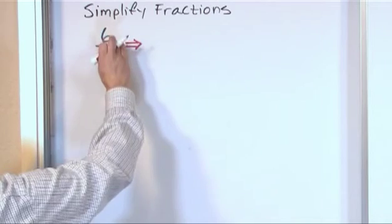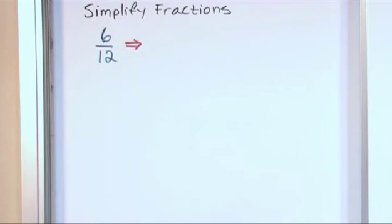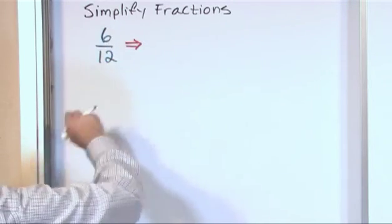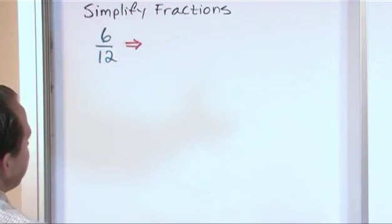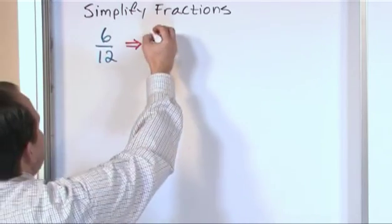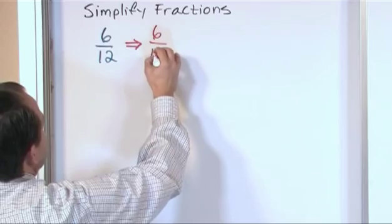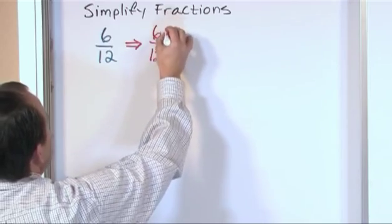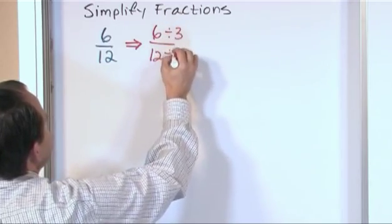But what you're trying to do is divide into the top and the bottom so that it will go an even number of times. So when I look at 6 and 12, the very first thing that I say to myself is, I know I can divide 3 into the top and the bottom. You might pick a different number. I'm going to pick 3. So let's say I have 6 twelfths. What I'm telling you is that you can divide the top by 3 as long as you divide the bottom by 3.